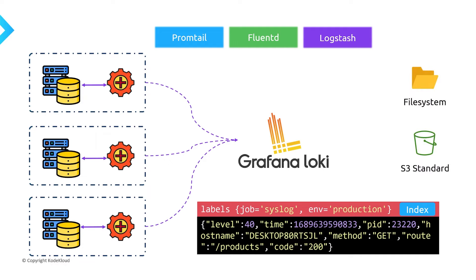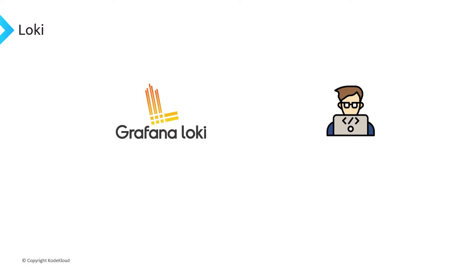With Loki, there's a variety of different storage options you can use to store the log messages. You could store it on the local file system of your Loki server, or you can use object-based storage like S3 or any of the other object-based storage solutions provided by the various cloud providers. Because you could just store it in object storage, it's going to be very cheap and very easy to operate because S3 is managed by AWS and it just infinitely scales up — you don't have to worry about managing an Elasticsearch database or anything like that. Once we have the logs in Loki, we make use of a query language called LogQL.